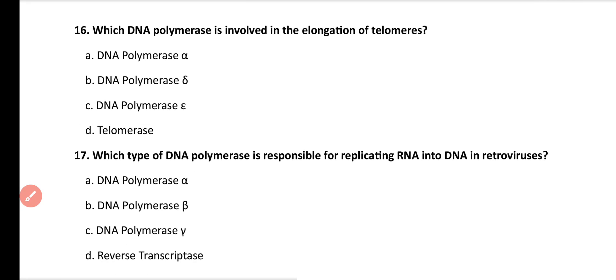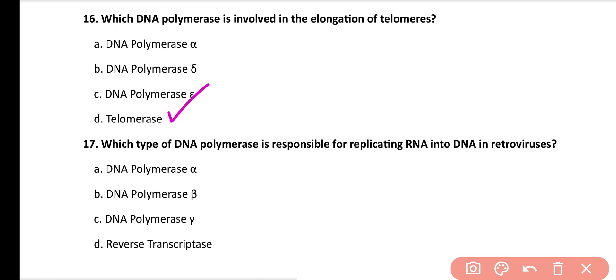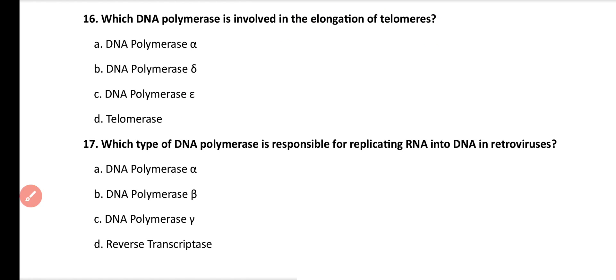Question number 16. Which DNA polymerase is involved in elongation of telomeres? DNA polymerase alpha, delta, epsilon, or telomerase? Correct answer is option D. Telomerases are the types of polymerases that are involved in elongation of telomeres.